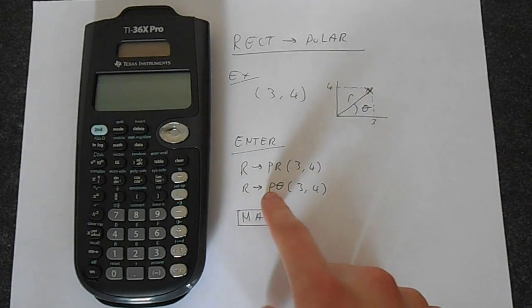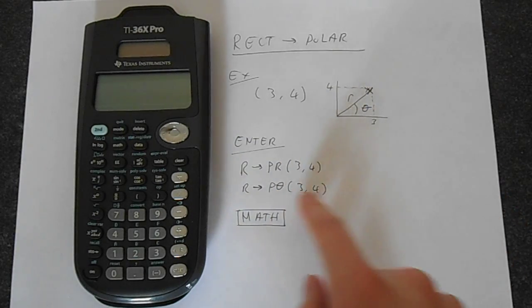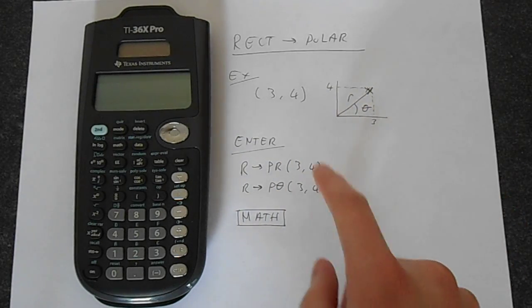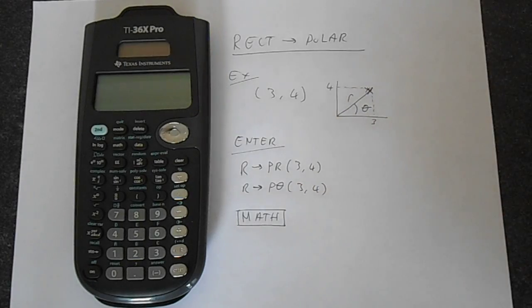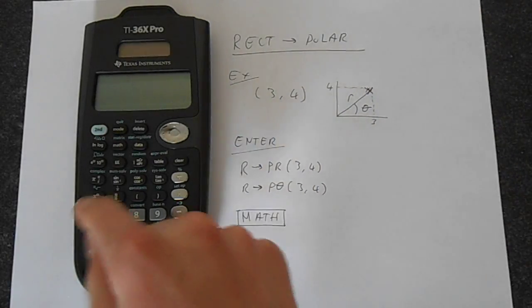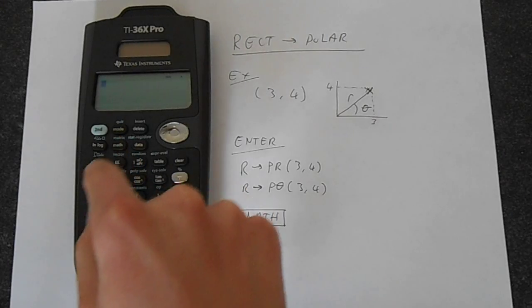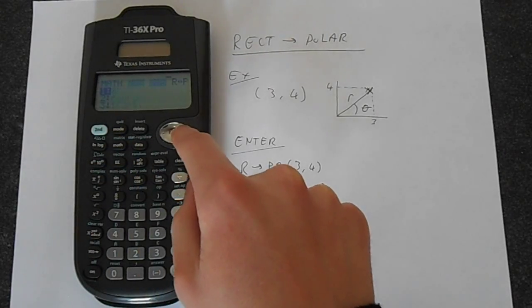And then the r→P theta which will give us this theta here when it has this argument or this data inputted into it. So what we need to do is we need to go to math and from here everything becomes really simple.